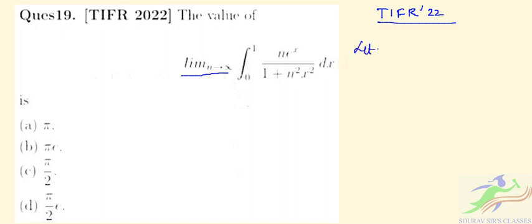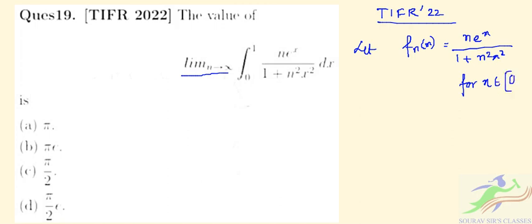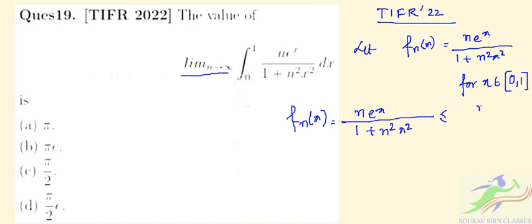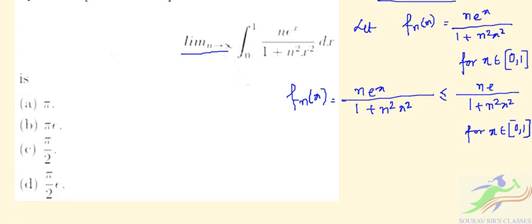Let us consider f_n(x) equal to n times e to the power x divided by 1 plus n squared x squared, for x in the interval [0, 1]. Now, f_n(x) can be written as: n·eˣ divided by (1 + n²x²) is less than or equal to ne divided by (1 + n²x²), for x in the interval [0, 1].